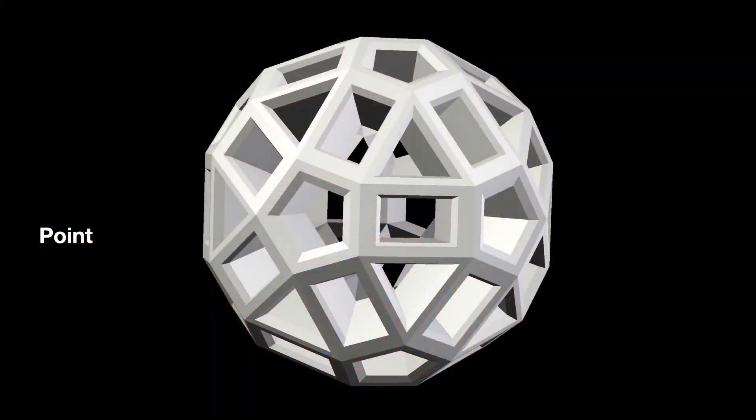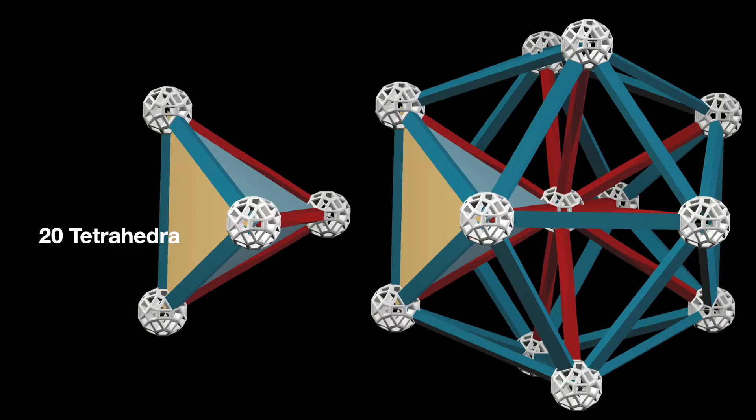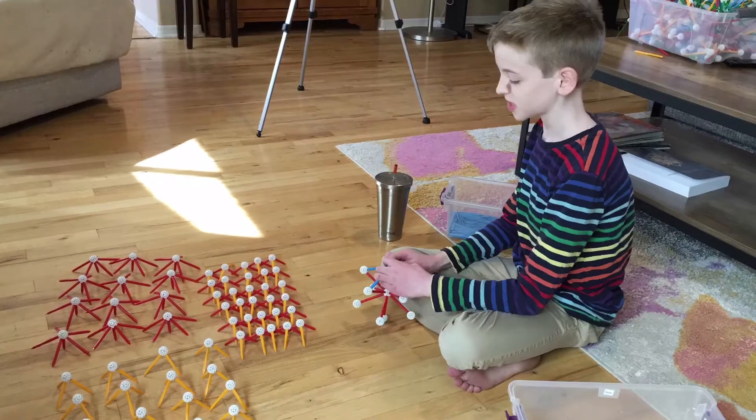The first layer is a point, and then there's 20 tetrahedra coming out of it. As you can see, I am making this right now.